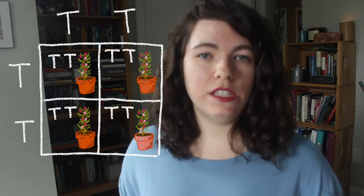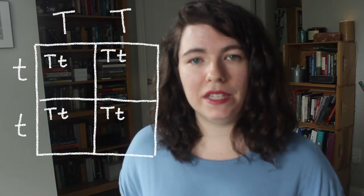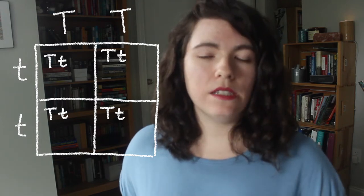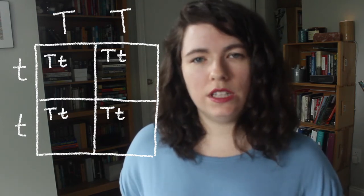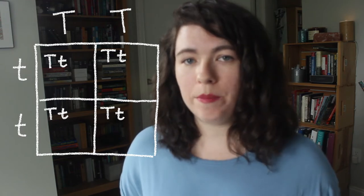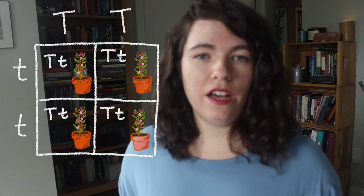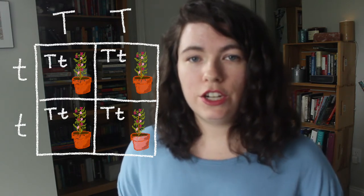When both parents are purebred, the trait will always show up the same in the offspring. But when crossing a purebred tall plant and a purebred short plant, something interesting happens. All the possible offspring would have a tall-short allele combination — getting one tall allele from the tall parent and one short allele from the short parent. You might expect that one tall and one short would make a medium-sized plant, but Mendel observed that all of the offspring of this pairing turned out to be tall.